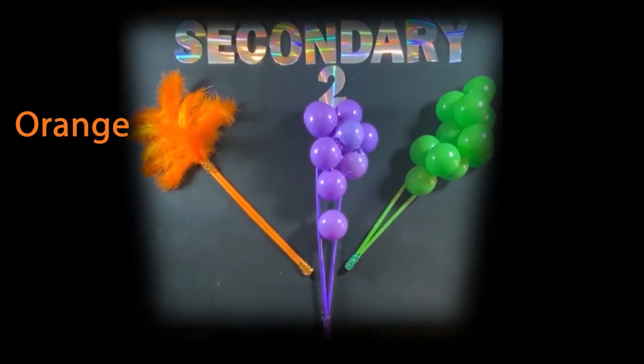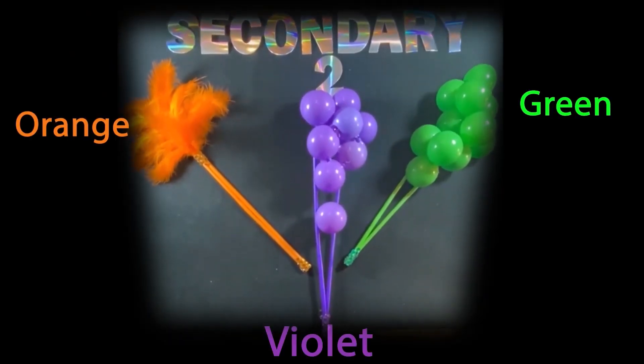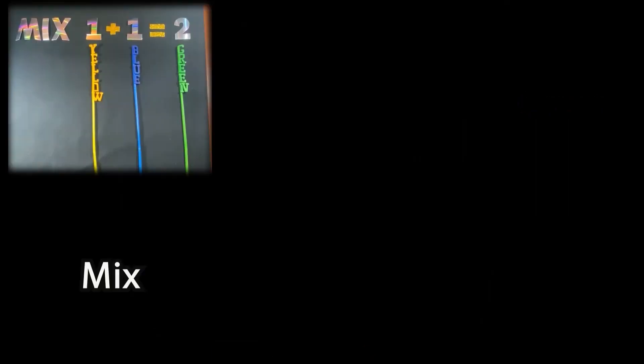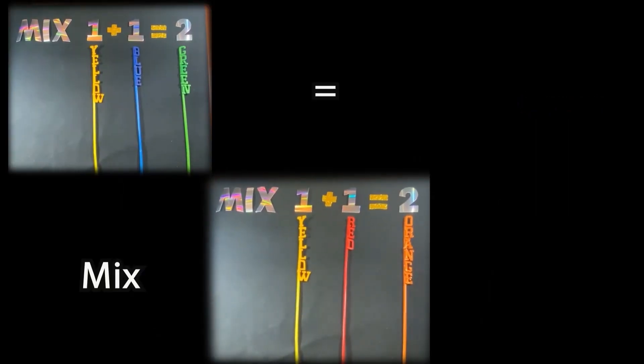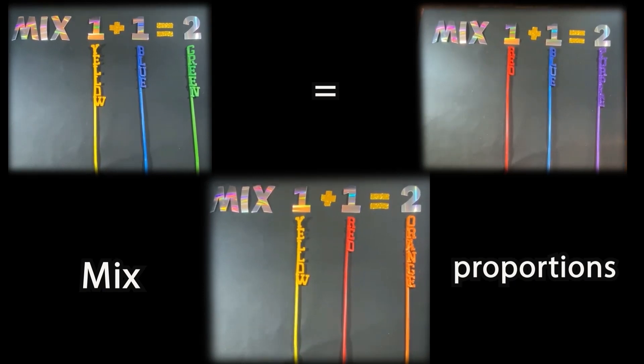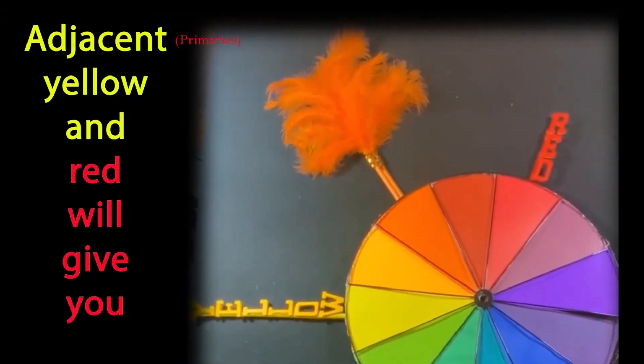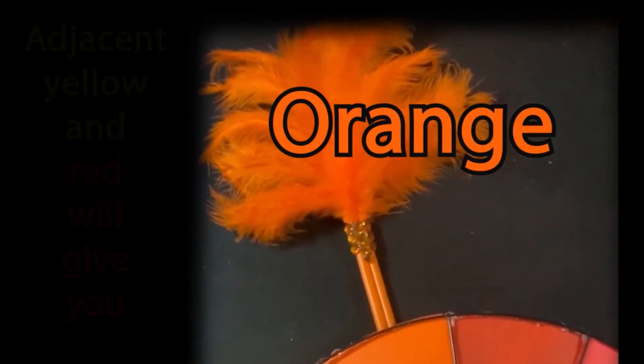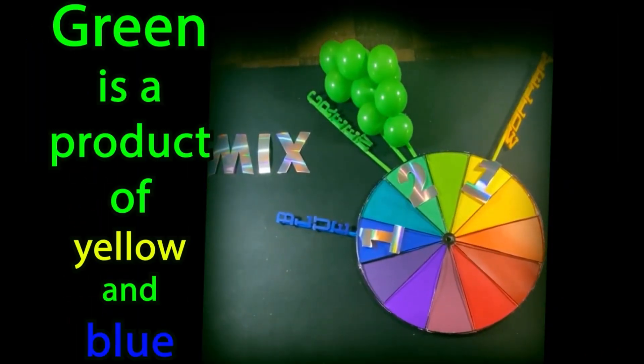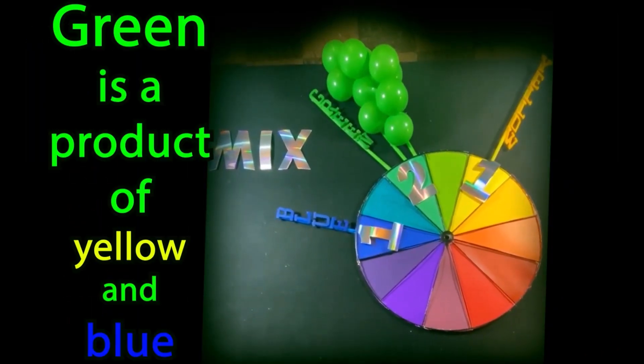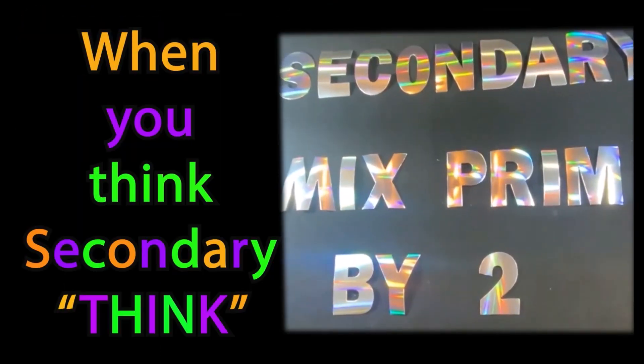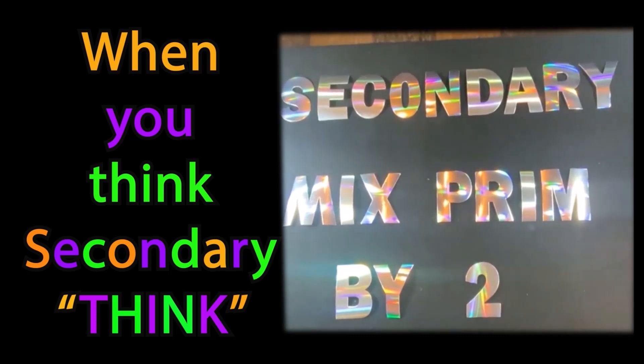Secondary colors are orange, violet, and green. Mixing equal primary proportions will give you hues in between. Adjacent yellow and red will give you orange. Green is a product of yellow and blue. When you think secondary, think mixing primaries by two.